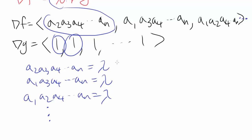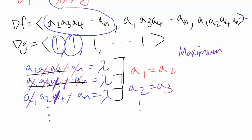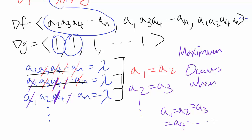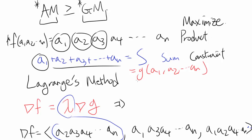Since both equations equal lambda, we can set them equal to each other. The A₃s cancel out, A₄s cancel out, all the way up to Aₙ, and we get A₁ = A₂. Looking at the next two equations, A₁s cancel, A₄s cancel, and so on, giving us A₂ = A₃. This pattern continues, telling us that the maximum occurs when A₁ = A₂ = A₃ = A₄ = ... = Aₙ — all the numbers are equal to each other.